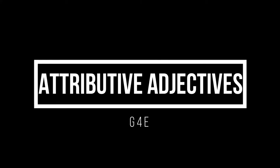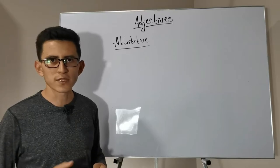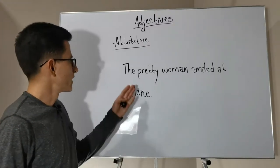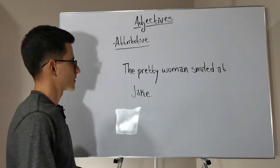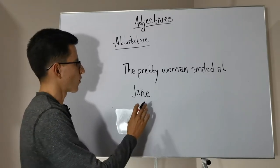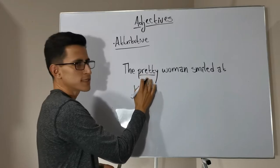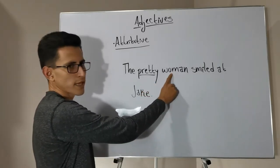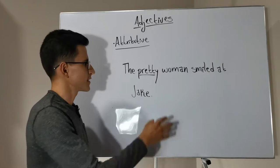Attributive adjectives are located right before the noun that they are modifying. Let's see an example: The pretty woman smiled at Jake. Let's identify the adjective — the pretty woman. Remember that adjectives modify nouns, so the adjective modifying this noun is the word pretty. This is the adjective in this sentence. And as you can see, it is preceding the noun, so we can say that the adjective pretty is an attributive adjective in this case.